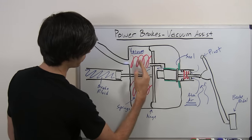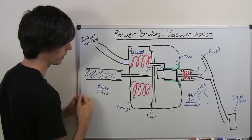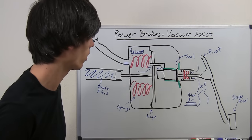So as that force pushes in, it pushes this cylinder which pushes on the brake fluid, which distributes out to your brakes and you slow down your car.